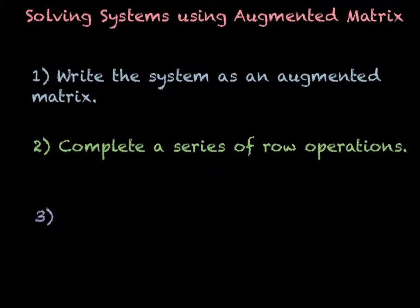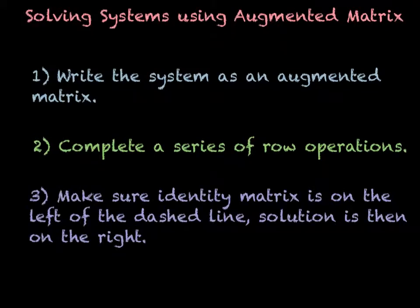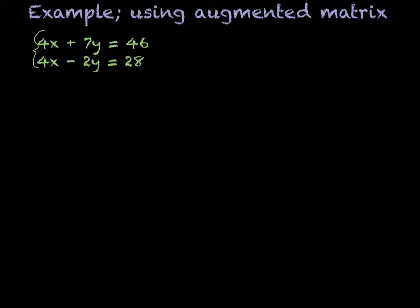The last step is to make sure that the identity matrix is on the left of the dashed line, and then the solution would be the right side of the line. Let's do an example of an augmented matrix.